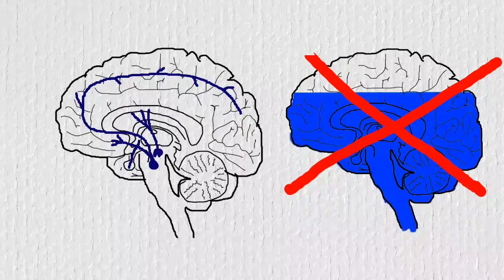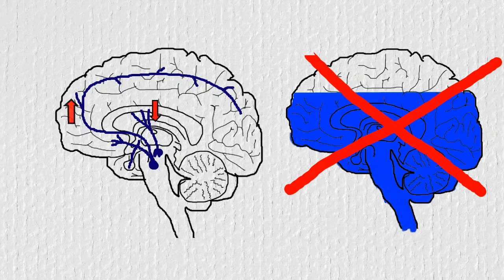So theoretically, you could have high dopamine levels in one region and lower levels in another.